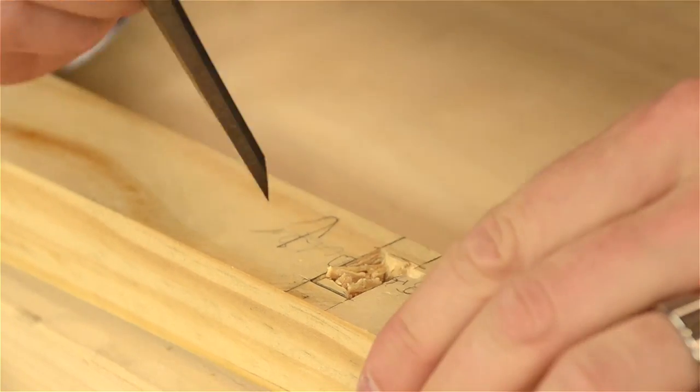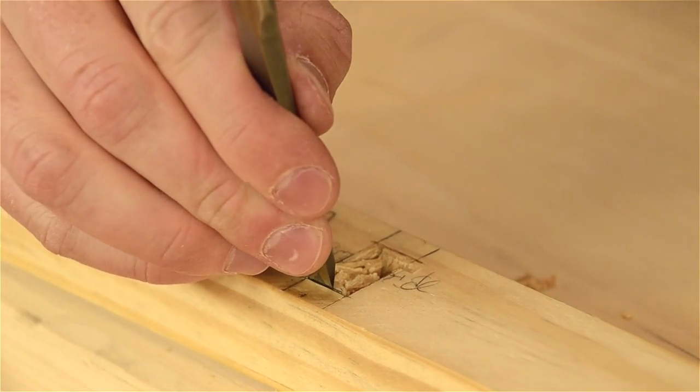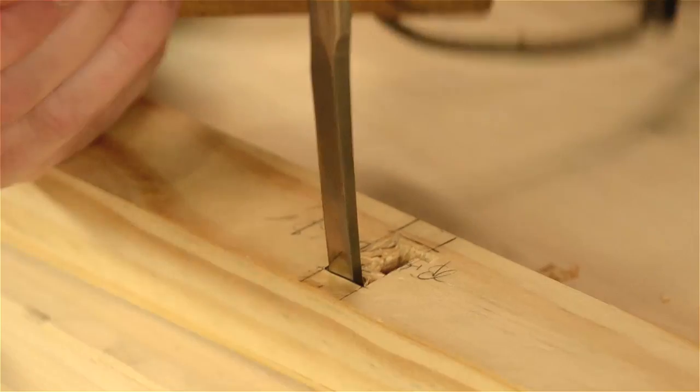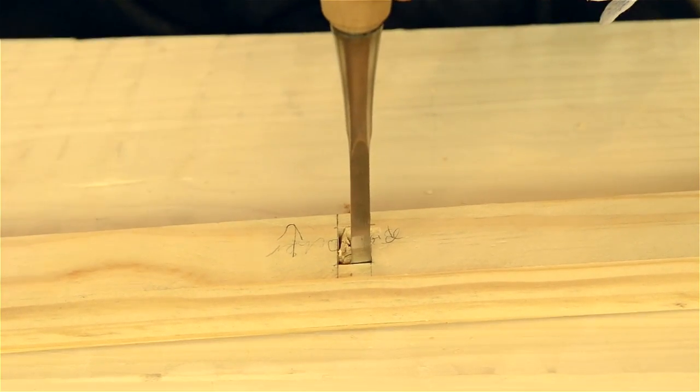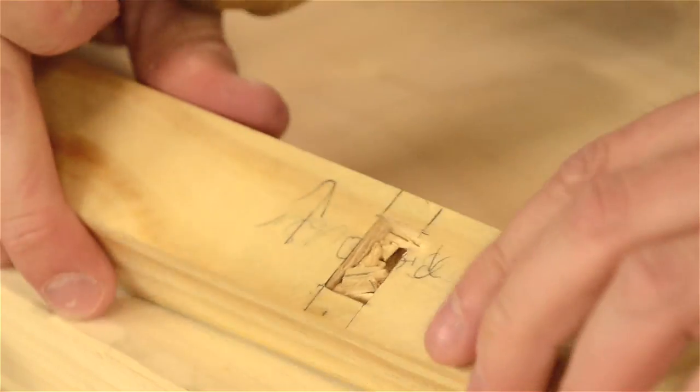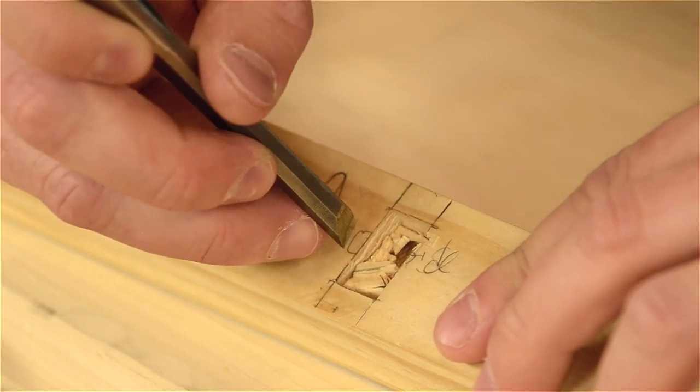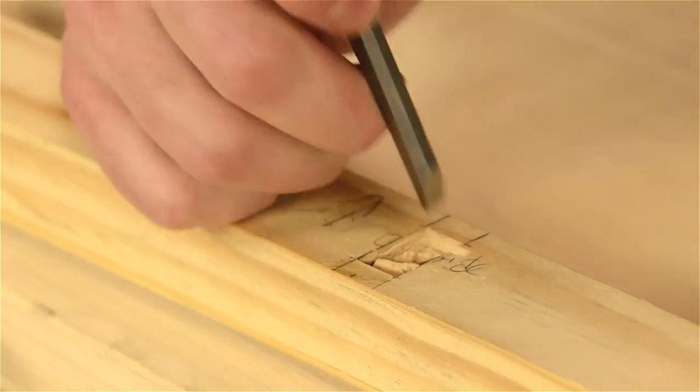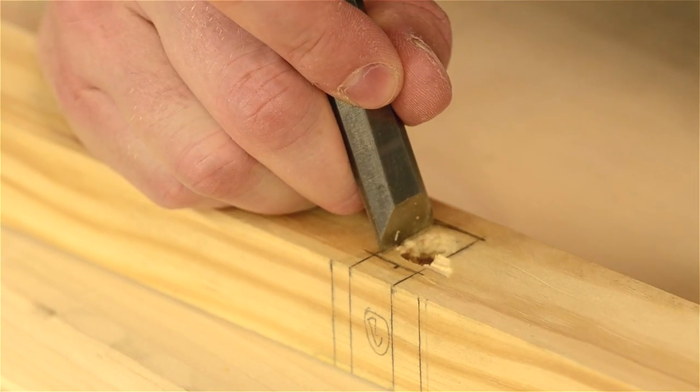You can see that there's some stops now so that if we chop here, it's not going to split out because we've stopped that. You can see there, that works, so right on the line. What you want to do is just come from the other side and do the exact same thing. Then once we get to that point, we'll just take this and clean it up by paring down. Paring means that you're not using your mallet, you're just pushing with the chisels.